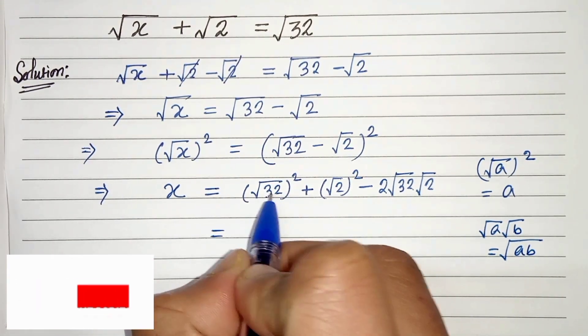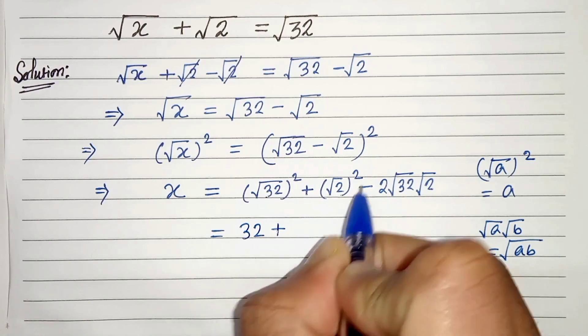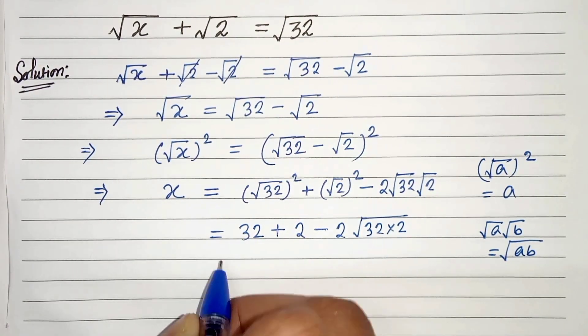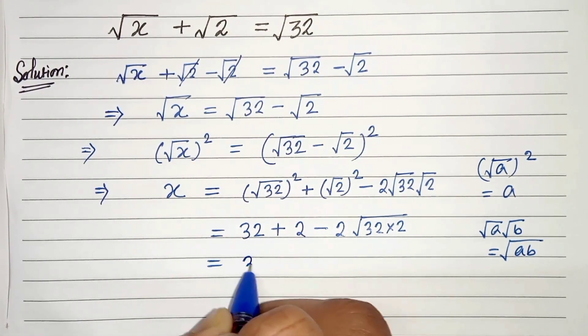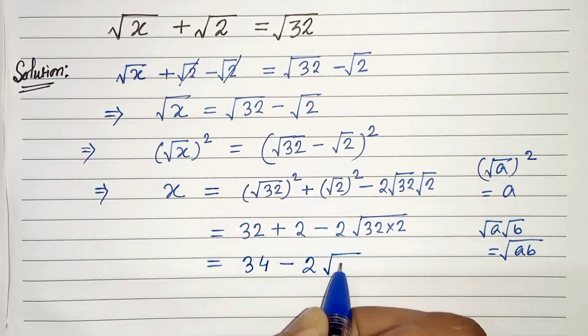So from this we can write (√32)² is 32 plus (√2)² is 2 minus 2√(32 × 2). In the next step, 32 + 2 is 34 minus 32 × 2 is 64.